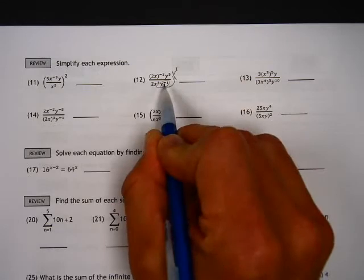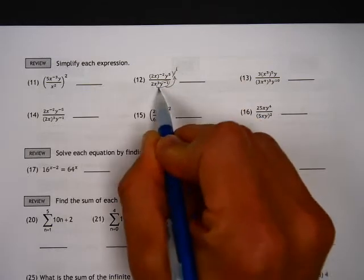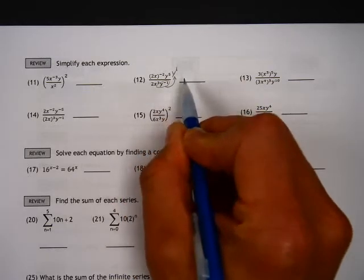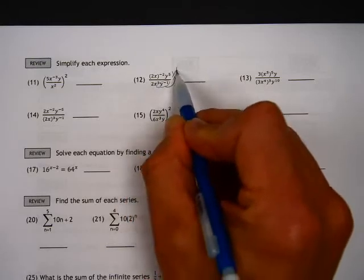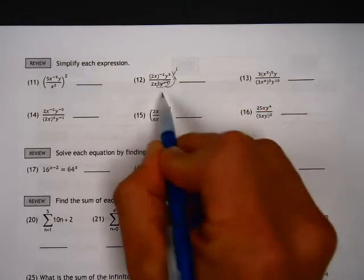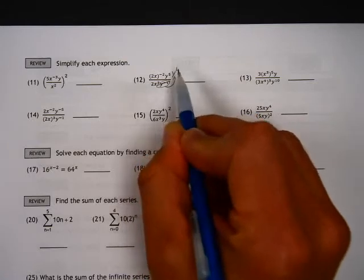And to do that, to change a negative exponent to a positive exponent, you've got to transfer it from the denominator to the numerator. So it's no longer y to the negative first on the bottom, but it's y to the first on top.